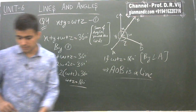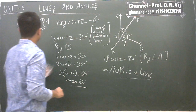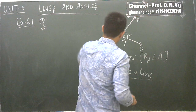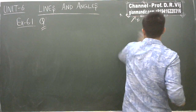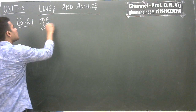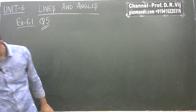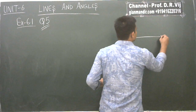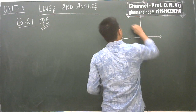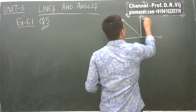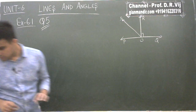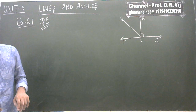Now let's move on to the fifth question. There is a figure with a straight line. Points R, S, P, Q, O are marked, and there is a right angle. The question says: in figure 6.17, POQ is a line, ray OR is perpendicular to PQ.